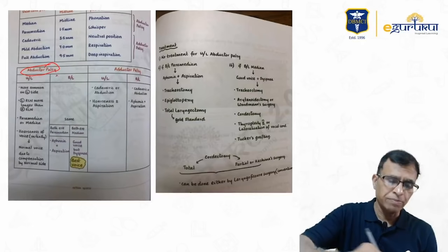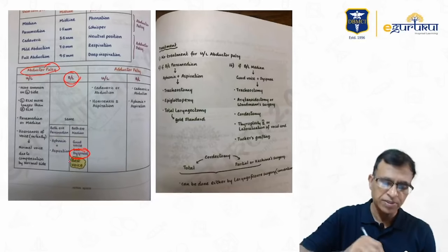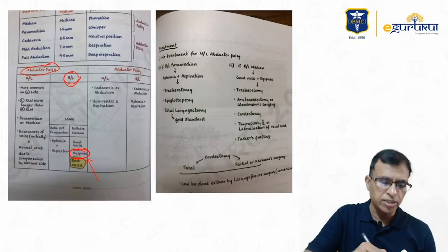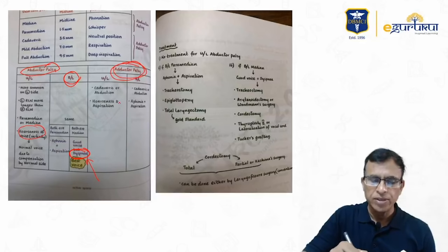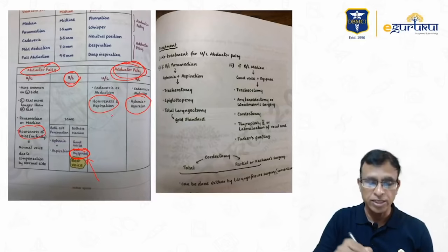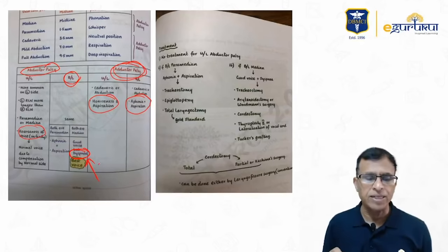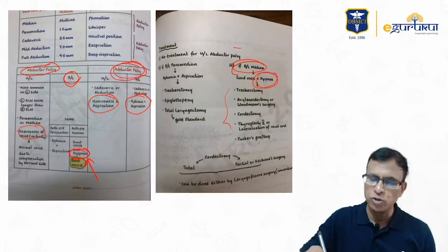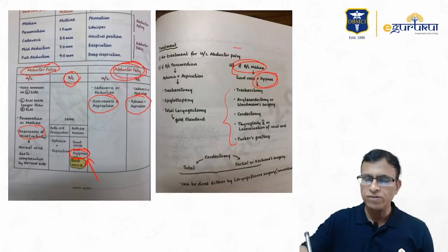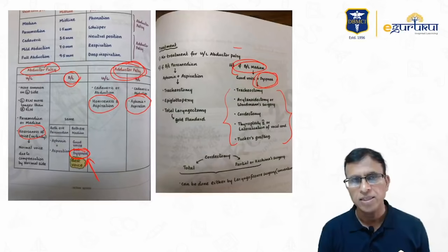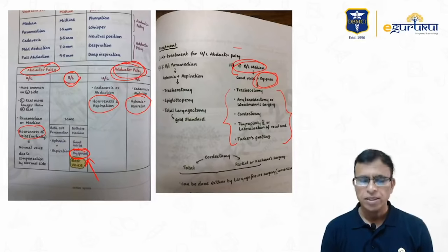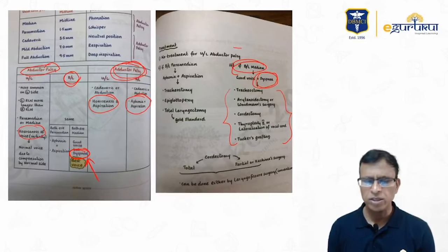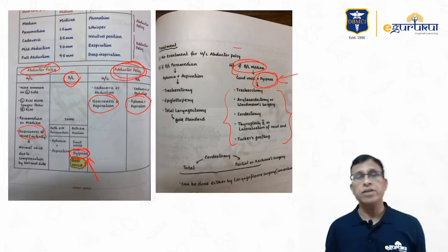Edema and hemorrhage from thyroidectomy are outside the larynx and cannot cause nerve palsy or dyspnea. Bilateral abductor palsy causes dyspnea — very clearly stated in the notes. Unilateral palsy causes only hoarseness. Superior laryngeal nerve palsy causes hoarseness and aspiration but no dyspnea. Recurrent laryngeal nerve palsy during thyroidectomy is a well-known complication, so it is given in the notes. This was a popular, straightforward question.